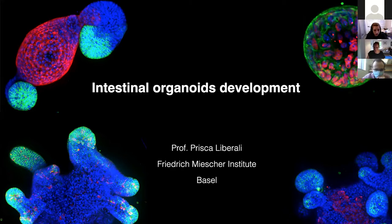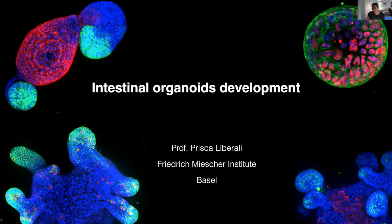Thank you very much for the introduction and invitation. Today I will discuss the work we have been doing in intestinal organoid development. One of the aspects we are most interested in is what we call the design principle of multicellular systems — really how to understand how individual cells can create higher order structures in multicellular systems. What are these properties that emerge at the tissue scale?